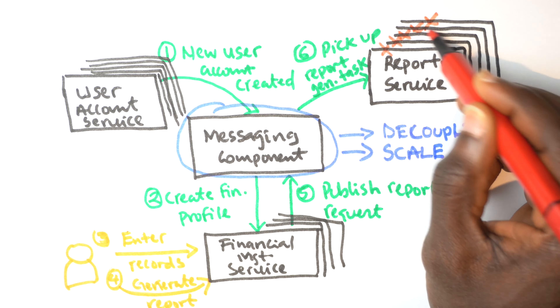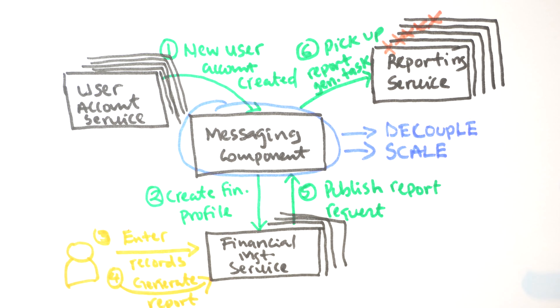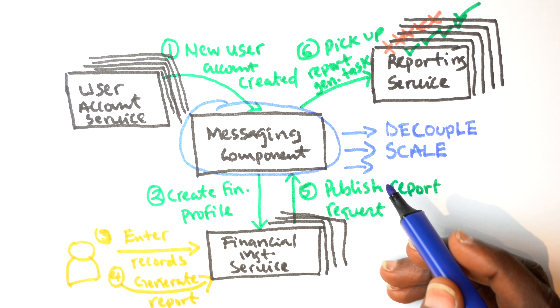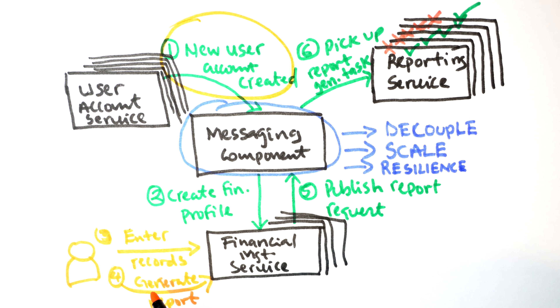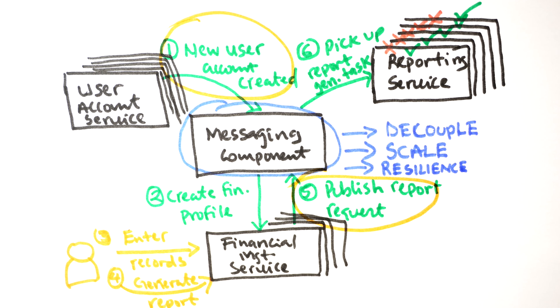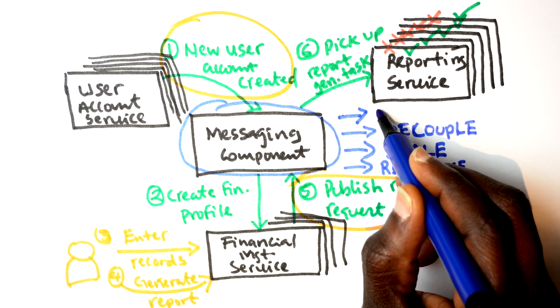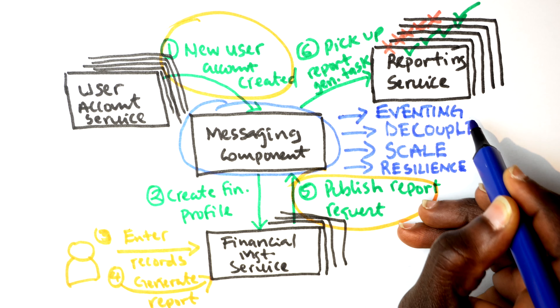Another advantage of messaging is resilience. If all reporting instances go down, the messaging component persists those requests for a period of time. When the reporting services come back online, they pick up the queued tasks and process them. Messaging also allows you to achieve an event-driven architecture, where everything that happens in your system is an event — events are queued, and different parts of the system identify which events they're interested in, pick them up, and process them.